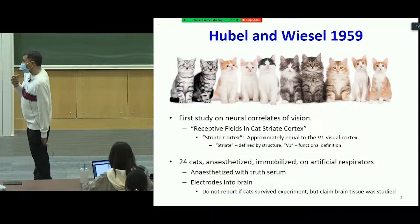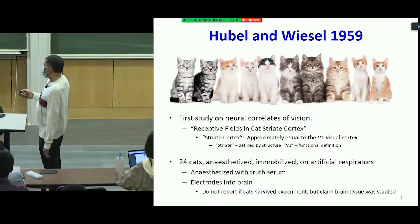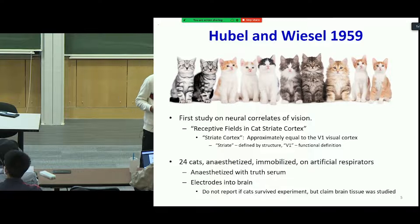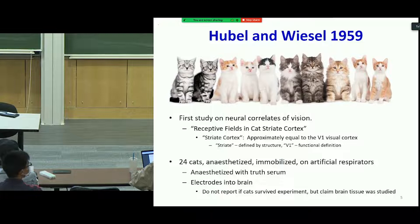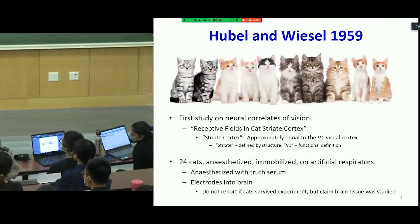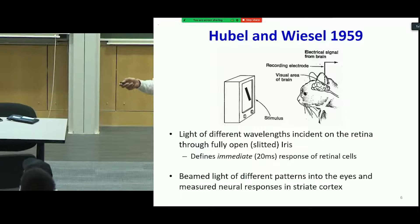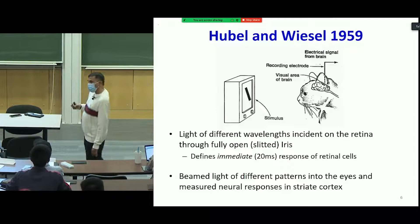They caught hold of 24 cats, anesthetized them, put them on artificial respirators, then opened their eyes and beamed light patterns on them. They never mention in the paper whether they actually killed the cats, but they do say that the brain tissue was studied. By the way, orange is a male dominant trait in cats, and tortoiseshell is a female dominant trait. They kept the eye open and beamed a laser light in various patterns, studying the response of individual cells in the striate cortex.